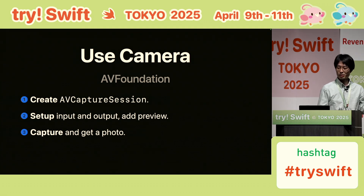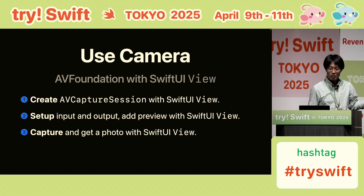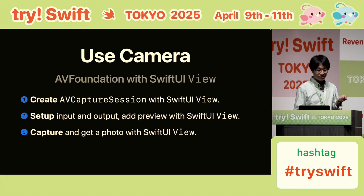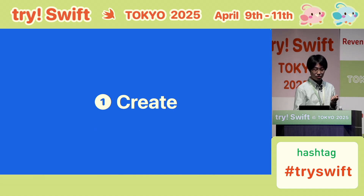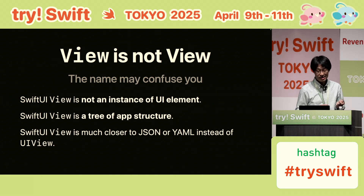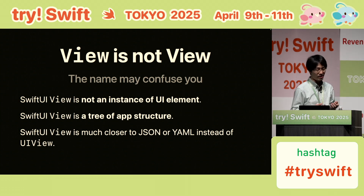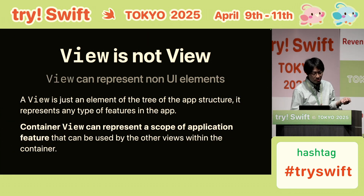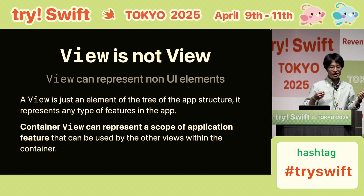Let's go back to the three-step process of using the camera. What if those three steps could be embedded within the SwiftUI view? So if we use the camera in a SwiftUI world, it would feel much more natural. A SwiftUI view is not a view in the traditional sense — honestly, I feel like it's a misleading name. SwiftUI view is not the UI instance; it's just a structure of the application. I think it's more like JSON or YAML. A SwiftUI container view can represent a kind of feature scope in the application — like a session of using the camera.